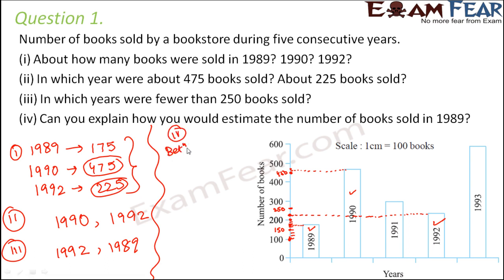Between 100 and 200 on the scale, how many units do we have? We have 10 units. These 10 units represent 100 books. That means one unit represent how many books? One unit represents 100 divided by 10 books, which is equal to 10 books. That means after 100, each unit represent 10 books.